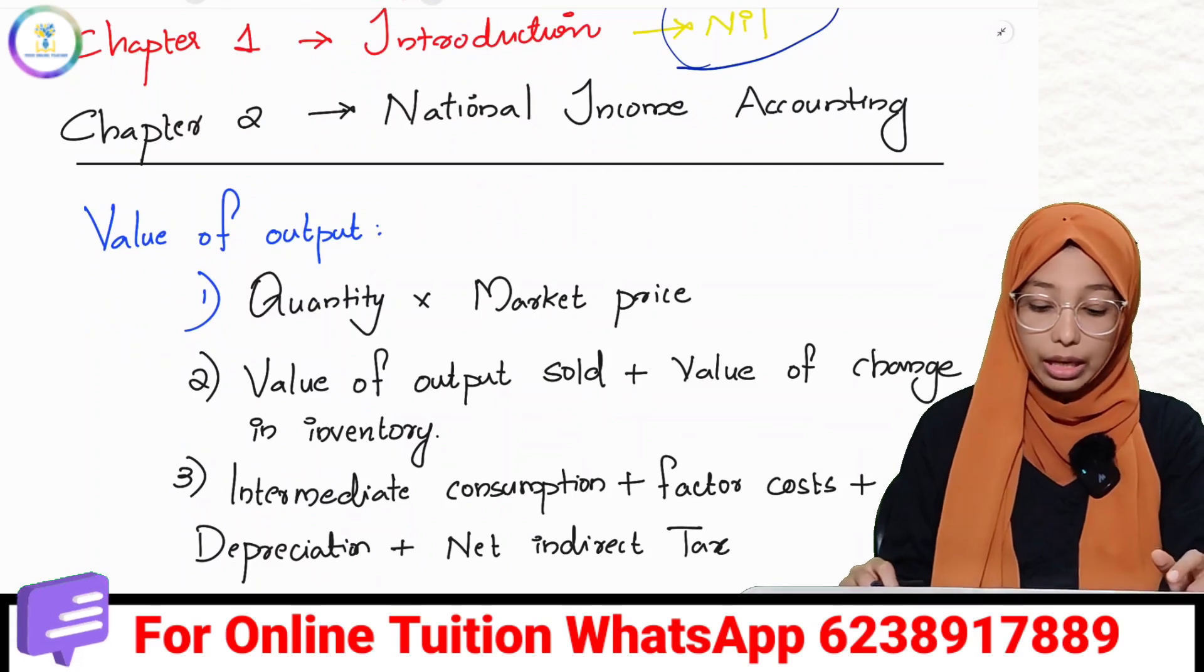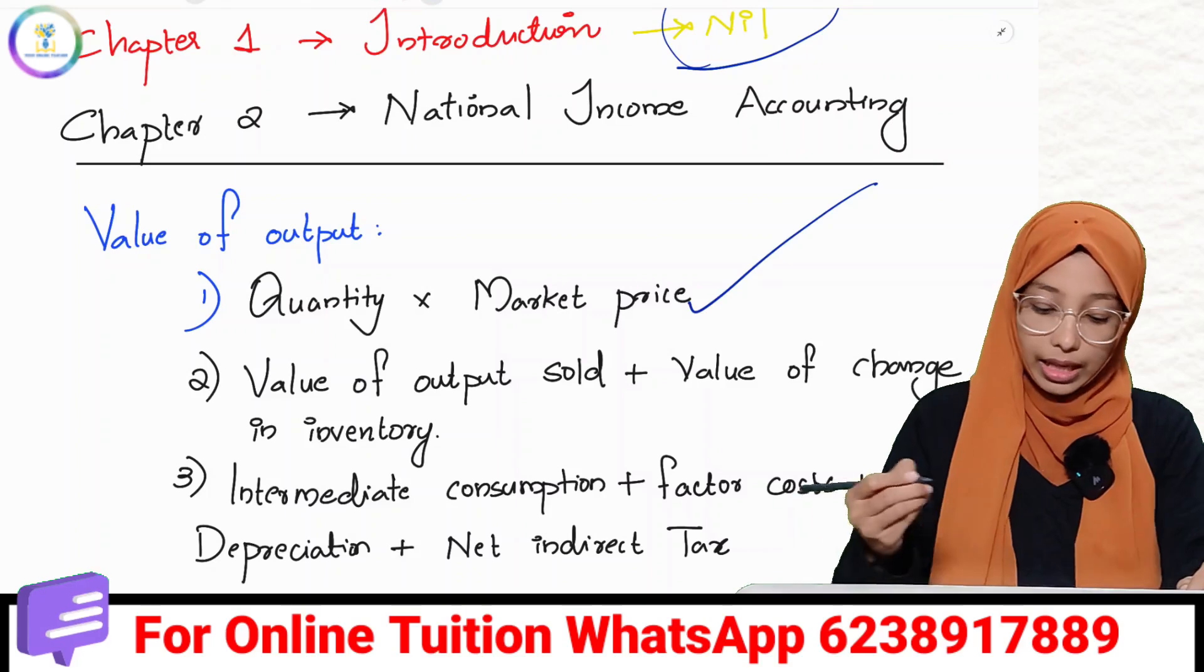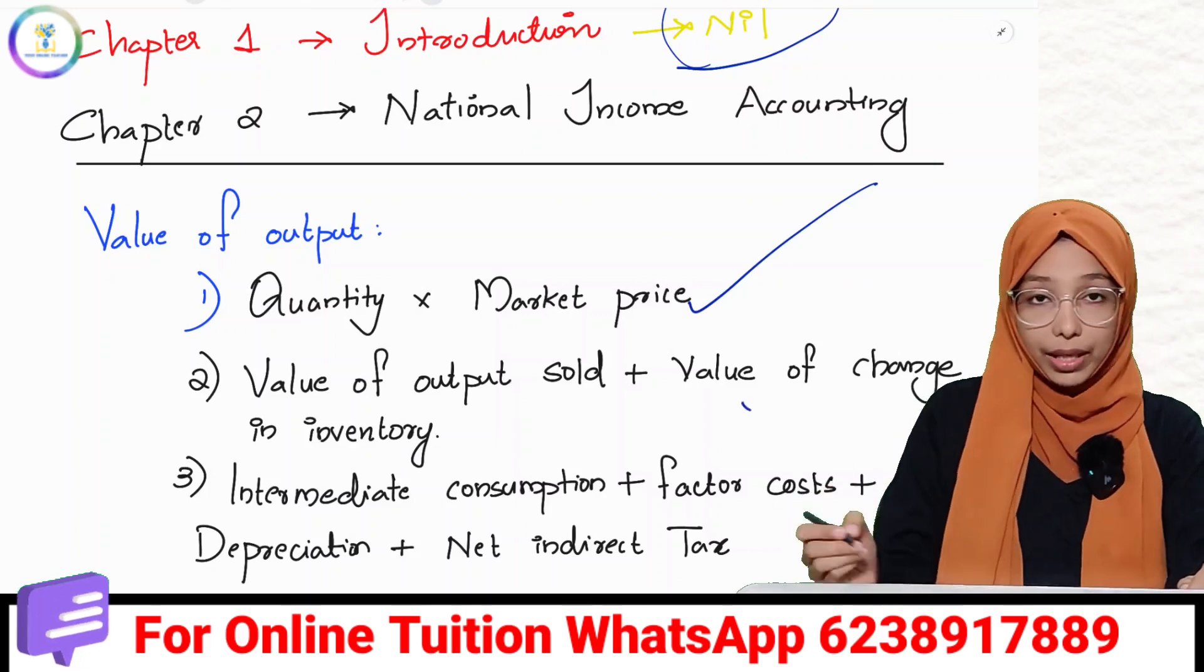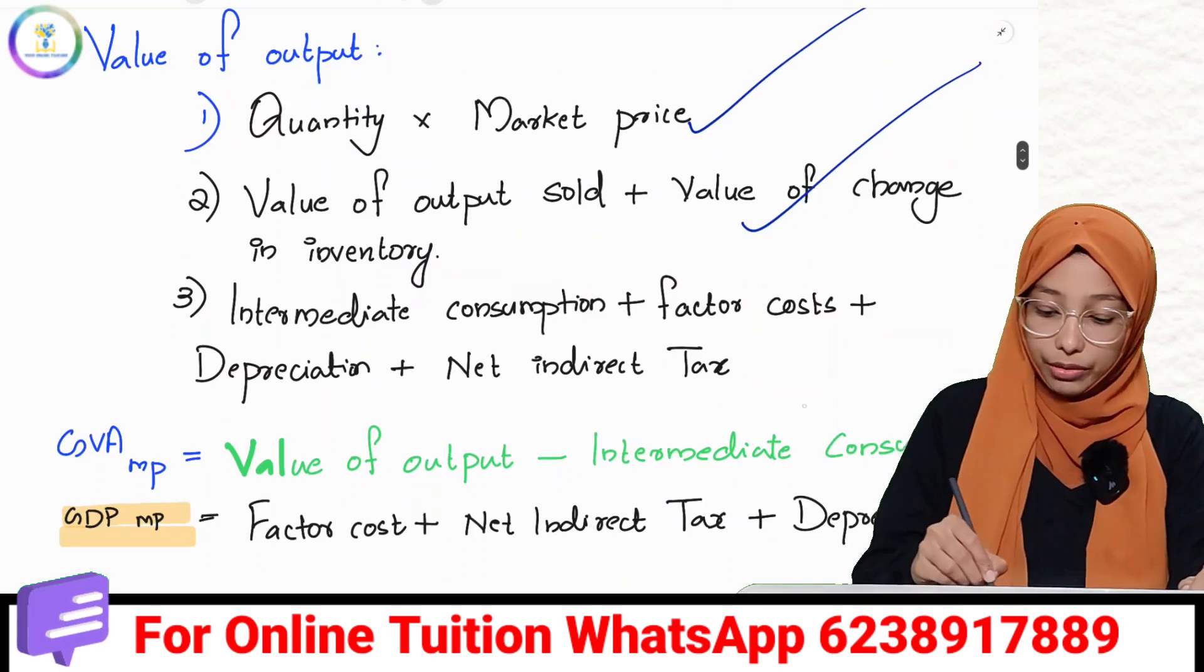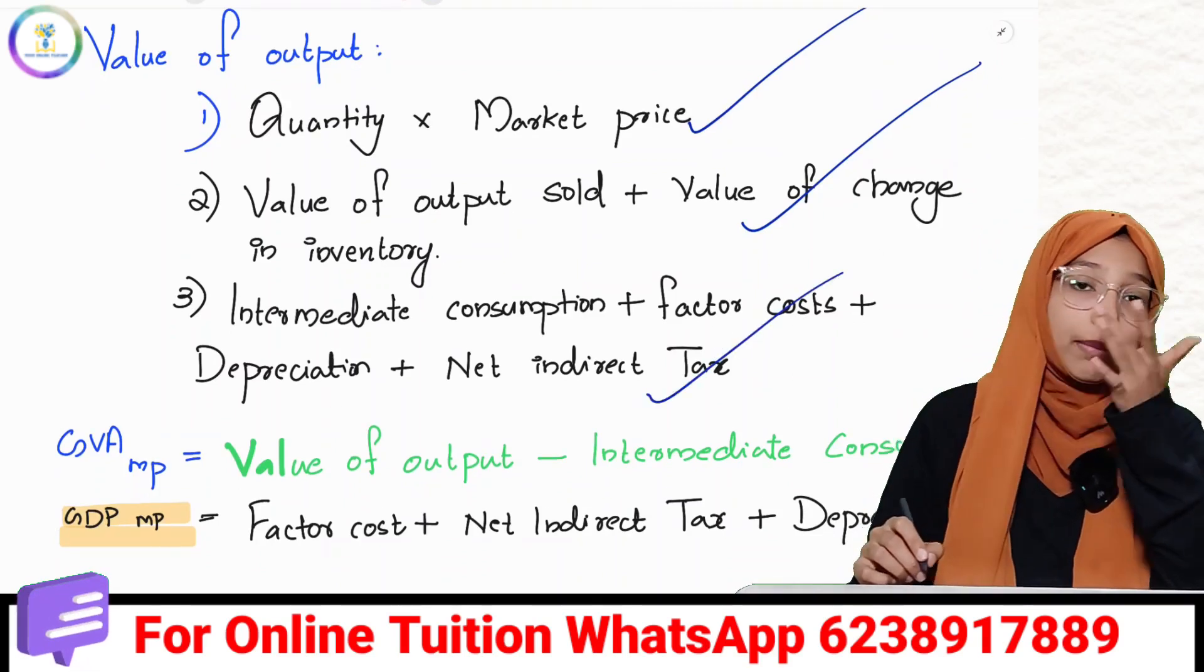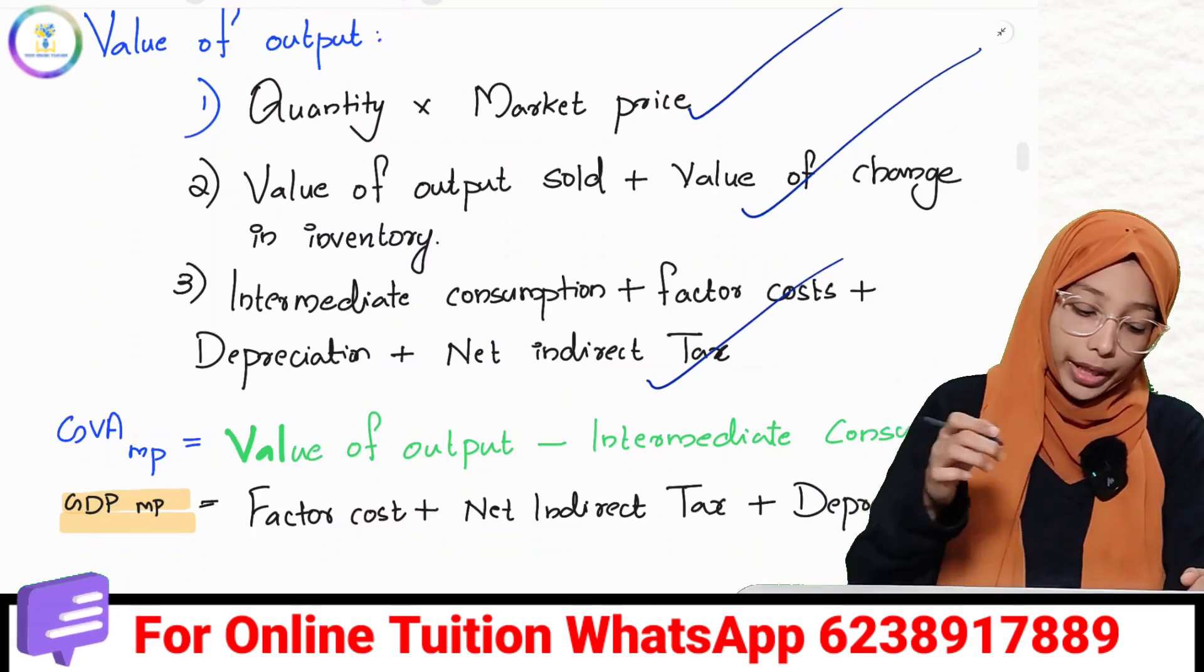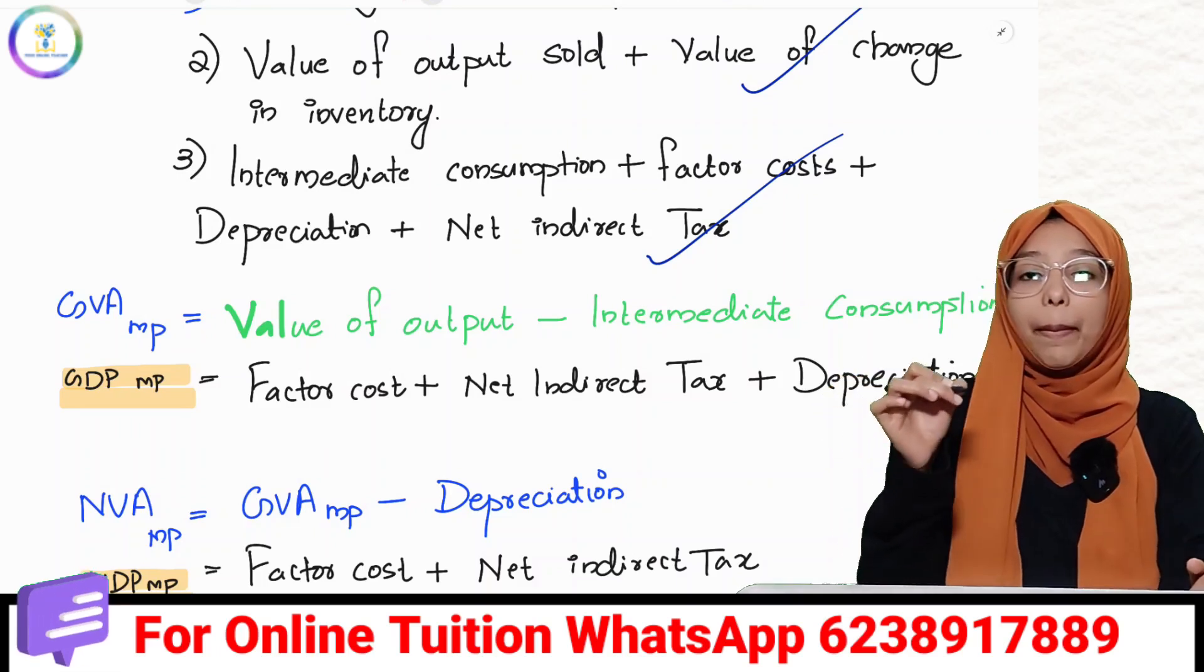The value of output has three equations: one, quantity times market price; two, value of output sold plus value of change in inventory; three, intermediate consumption plus factor cost plus depreciation plus net indirect tax. Now, gross value added at market price, GVAMP.